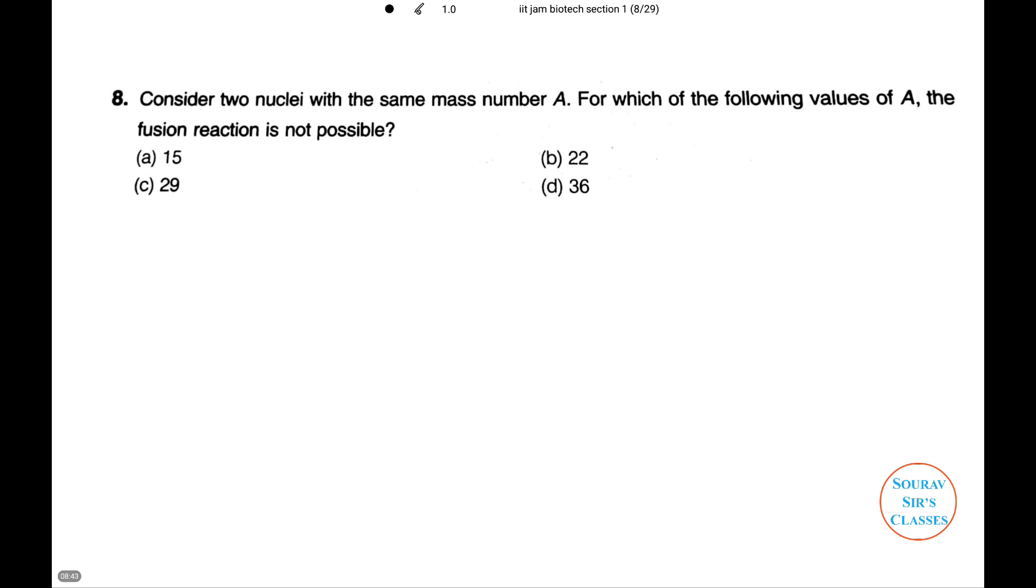Now, in the next question, we need to find among the following values of A in which fusion reaction is not possible. We will be considering two nuclei with the same mass number A. The mass numbers are given as 15, 29, 22, 36. The answer will be 36. I'll tell you why.